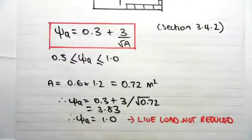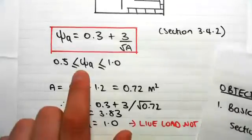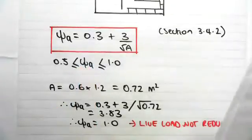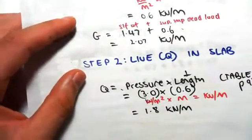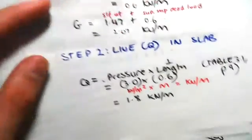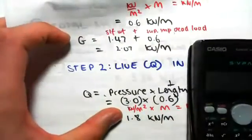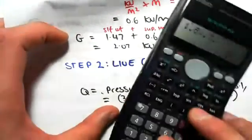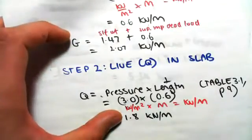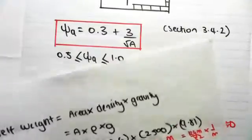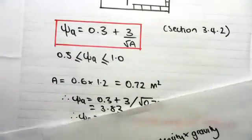But we're going to be seeing in the examples coming up that psi A will actually be between these values, and then what we can do is go to our live load calculation of 1.8 kilonewtons per meter, and say that we had a psi A equal to 0.7. Instead of 1.8, it's going to be 1.8 times 0.7. So we can now say it's 1.26 instead of 1.8. So we reduce the live load by using this thing called the live load reduction factor.